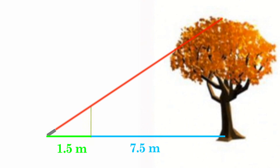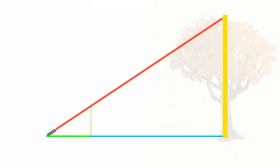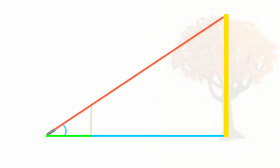What we've just done is create two similar right triangles. We've created one big right triangle where its height is the height of the tree, and one smaller right triangle where its height is the height of the meter stick. We know these triangles are similar because all of their angles are the same — they share the angle from the laser to the ground, and both are right triangles.